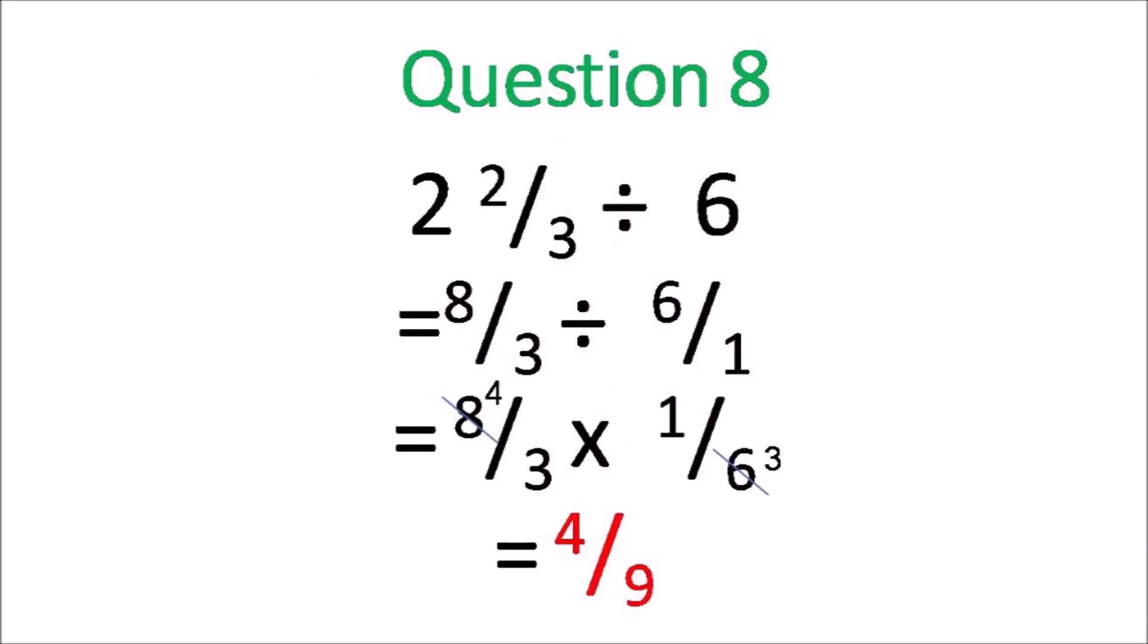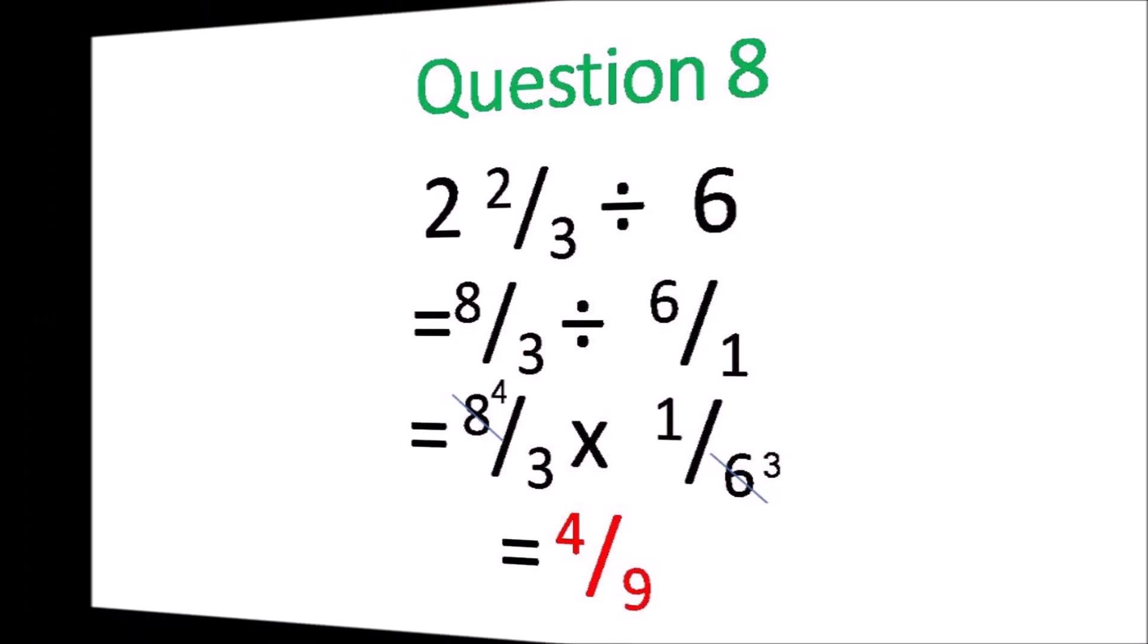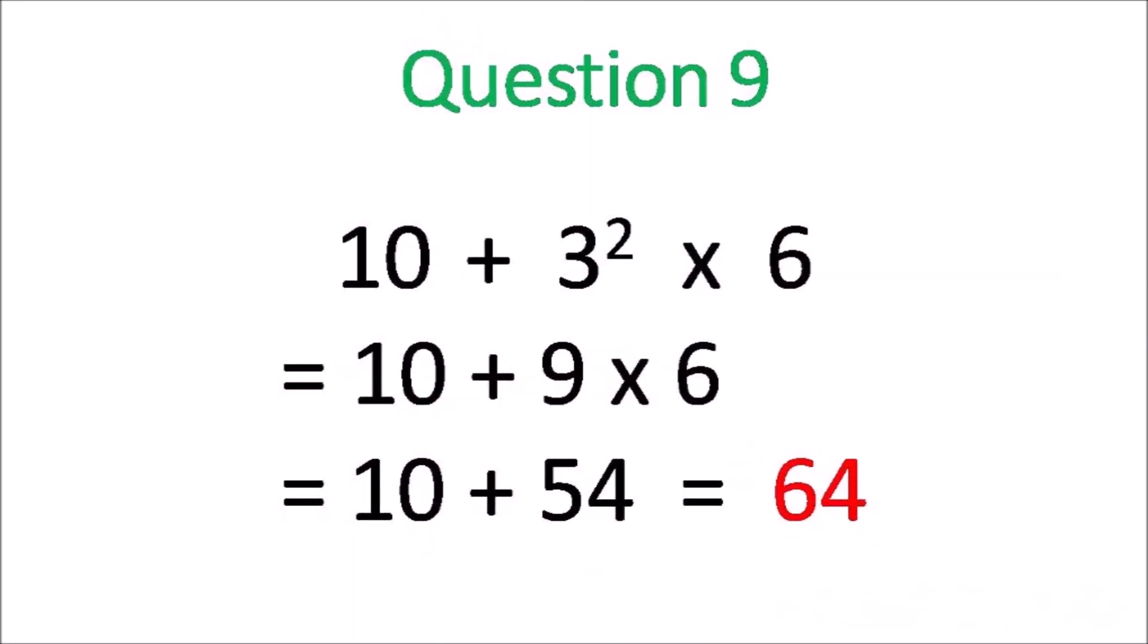Question 8. You're dividing with fractions. So you change it to an improper fraction, and then you have to multiply. So you turn it upside down. You get 4 ninths.